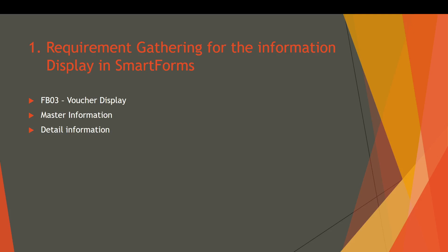Let's start our first step: requirement gathering for information to display in the smart form. As discussed earlier, we are going to display the financial voucher information in our smart form. We know that FB03 is the transaction code for voucher display. Let's go to the system and explore the technical requirements directly from the transaction code. We also need to identify what will be the master information and what will be the detailed information.